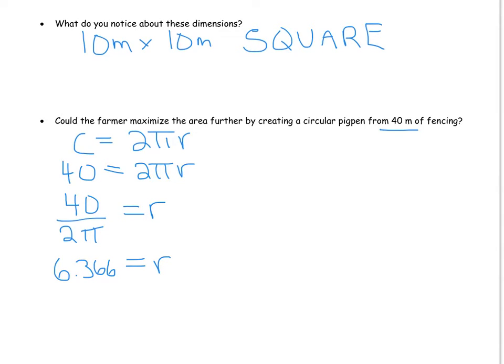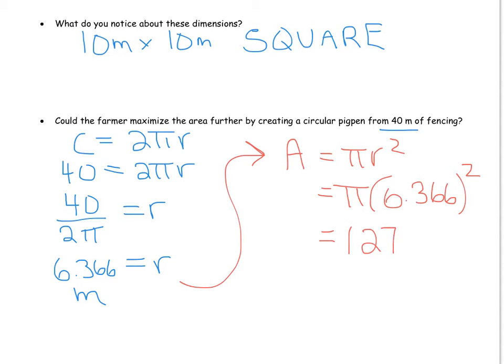And of course that would be in meters. And then I want to know what's the area then? Is that area better and bigger than the 10 by 10 square? So then I can find out the area of this circle is πr². And I kept lots of decimal points just to make it as accurate as possible. So if I take my 6.366 and I square it, I actually get an area of 127.3 meters squared.